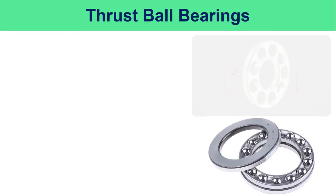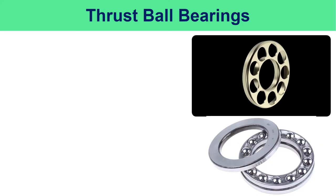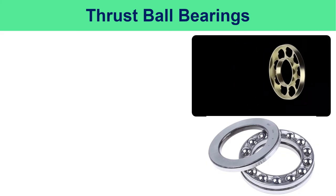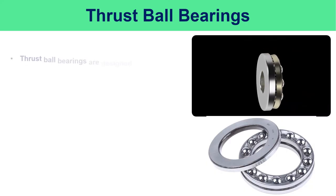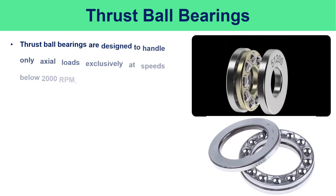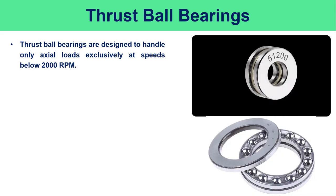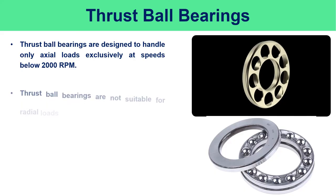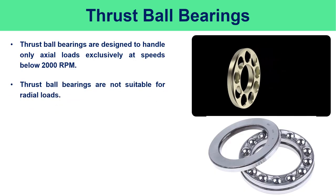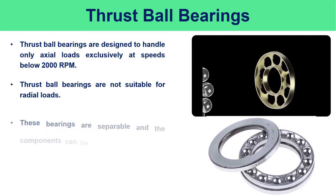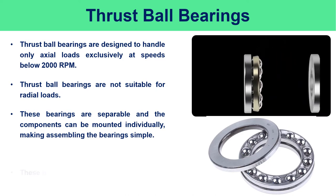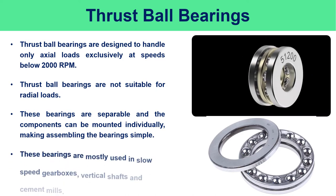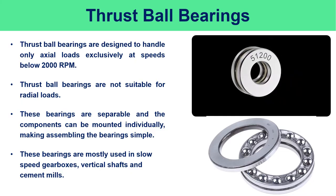Thrust ball bearings have balls enclosed in a cage between the shaft washer corresponding to the inner ring and a housing washer corresponding to the outer ring. Thrust ball bearings are designed to handle only axial loads, exclusively at speeds below 2000 rpm, and are not suitable for radial loads. These bearings are separable and components can be mounted individually, making assembly simple. They are mostly used in slow-speed gearboxes, vertical shafts, and cement mills.